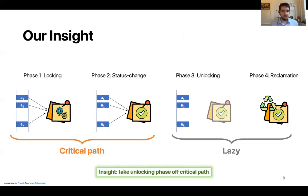Our insight in this work is that we can shrink the critical path by taking the unlocking phase off the critical path and doing the unlocking in the background. So this may sound very simple, but of course, care has to be taken to ensure correctness with this new behavior of returning early.